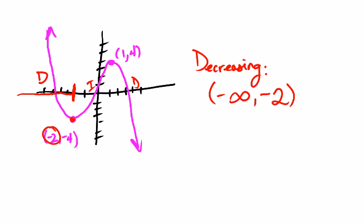And then it'll start decreasing again at the x value of 1 as it moves from here to positive infinity. So 1 to positive infinity. And we only use parentheses in this case because it can't equal those numbers.